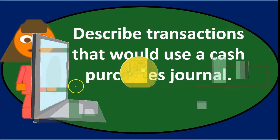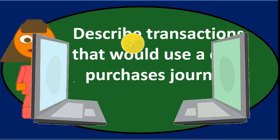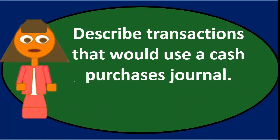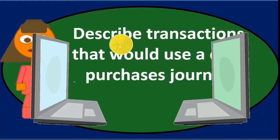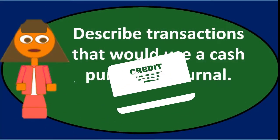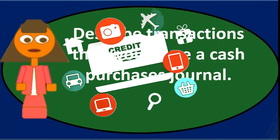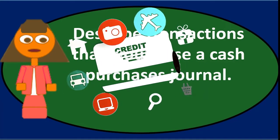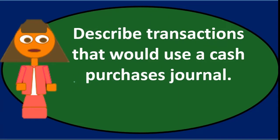The purchases journal obviously involves purchases, but that's a bit too simplified. Although we are purchasing things with the purchases journal, it is possible to purchase something and not have a transaction that belongs in it. It might better be called the purchases on account or purchases and accounts payable journal, because what's really happening is we're purchasing something on credit — we've bought something and owe payment in the future — and that transaction is fairly standard.